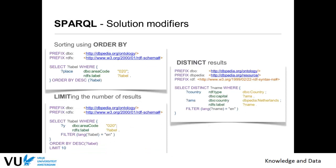Next to FILTER, we have several other solution modifiers that look very much like SQL modifiers. Results can be ordered based on alphabetical order or numerical order — for example, you can order by population total descending, from largest to smallest. We already discussed LIMIT. DISTINCT means that if a node like Amsterdam is returned multiple times by a query, it will show only once in the result set. You put DISTINCT after SELECT.